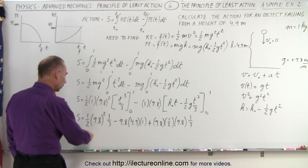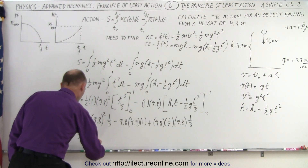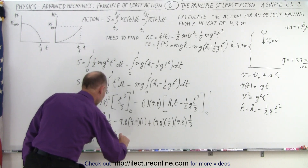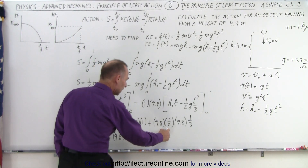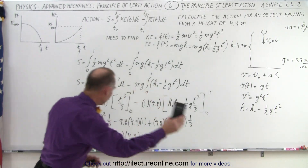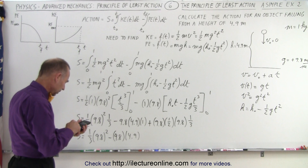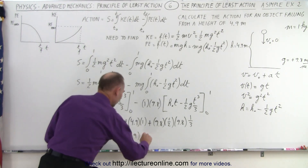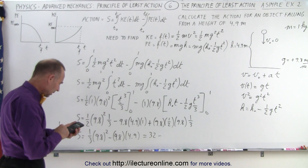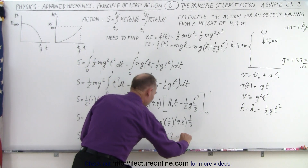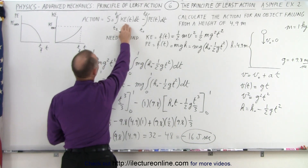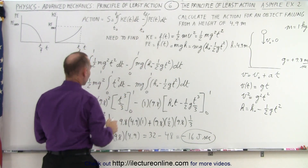Combining, we have two of those one-sixth 9.8 squared terms, giving us one third times 9.8 squared, minus 9.8 times 4.9. With a calculator, 9.8 squared divided by three equals 32, minus 9.8 times 4.9 which is 48. The difference is minus 16 joules times seconds. Remember, we are integrating the kinetic energy over time, so when we integrate we get kinetic energy times time — units of joules times seconds.